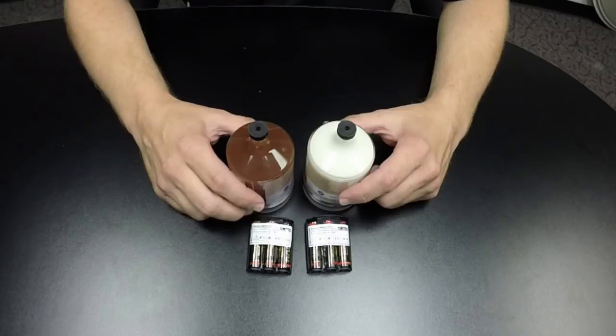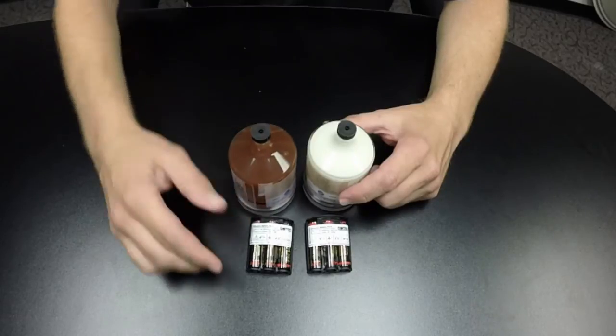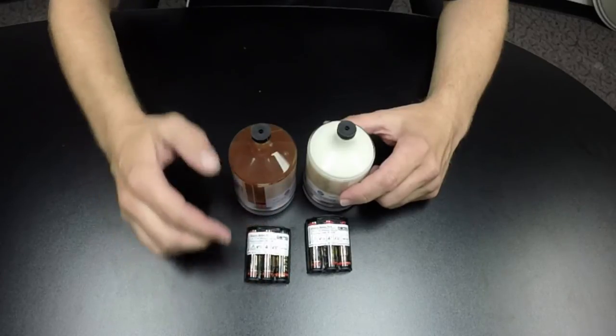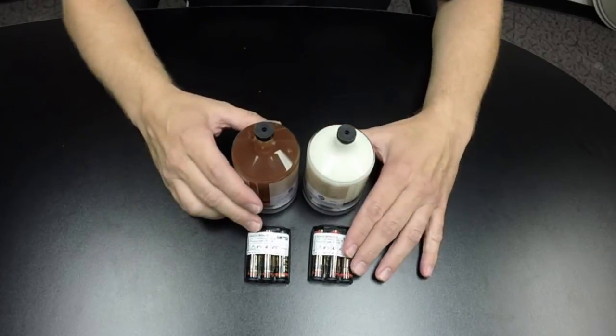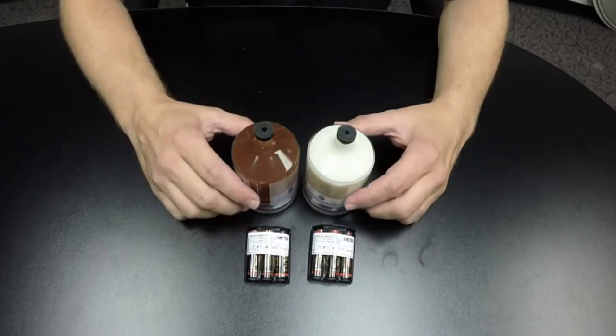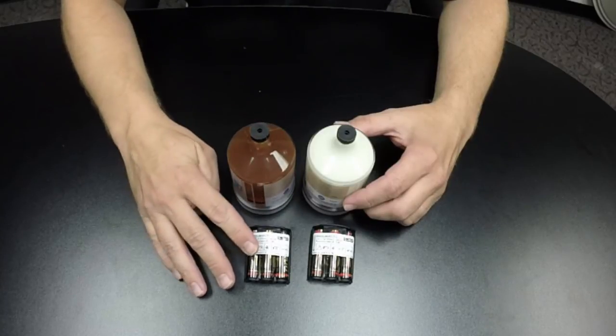Refill kits are available so that only the lubrication canister and batteries need to be changed. Whenever the lubrication canister needs to be changed, the battery set must also be replaced. SWECO offers a refill kit which includes one lubrication canister of the specified size and grease, and one battery set.